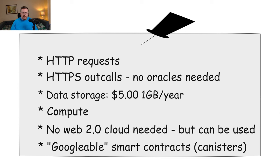On-chain data storage is only about $5 per gigabyte per year. Compute or computational power is also available on-chain, and this means that there is no Web 2.0 cloud needed, but it can still be used.